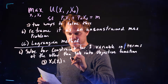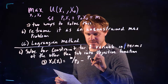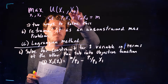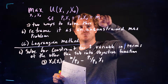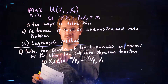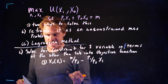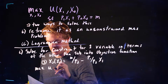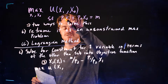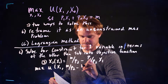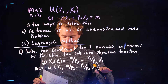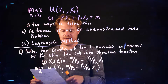So x2 as a function of x1 is m over p2 minus p1 over p2 times x1. That's just the same line that we drew before — we're just rearranging the budget constraint. I'm moving p1·x1 to the right-hand side, subtracting it from both sides and dividing both sides by p2. Now what we want to do is maximize u of x1, substituting in m over p2 minus p1 over p2 times x1 for x2, and we get to pick x1.